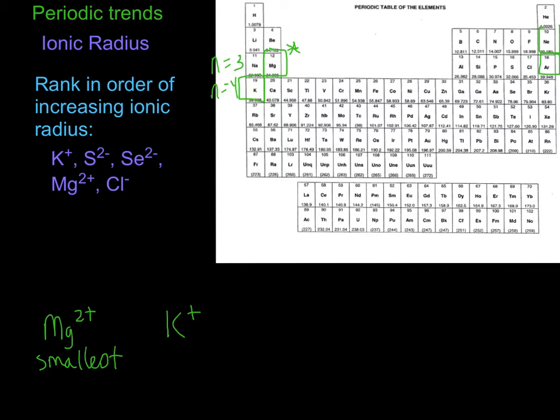So now let's focus on the anions. So now we have sulfur 2 minus, that's the same configuration as argon. We have selenium 2 minus, that's the same configuration as krypton.